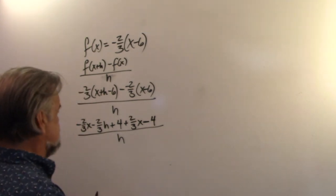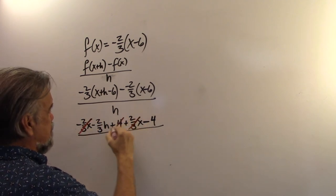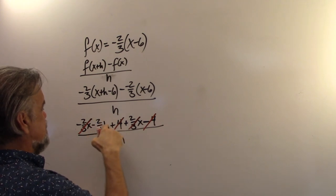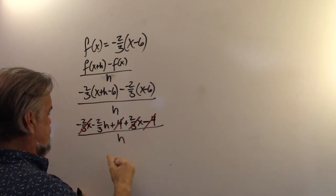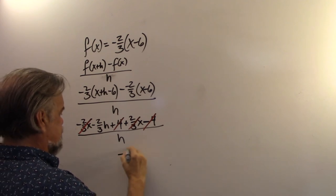Time to do some simplifying. Negative 2 thirds x, positive 2 thirds x plus 4 minus 4. And we're left with negative 2 thirds h over h, which is simply negative 2 thirds.